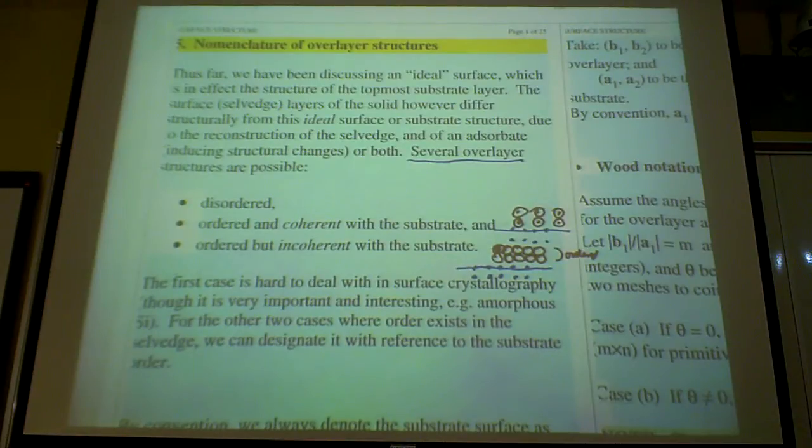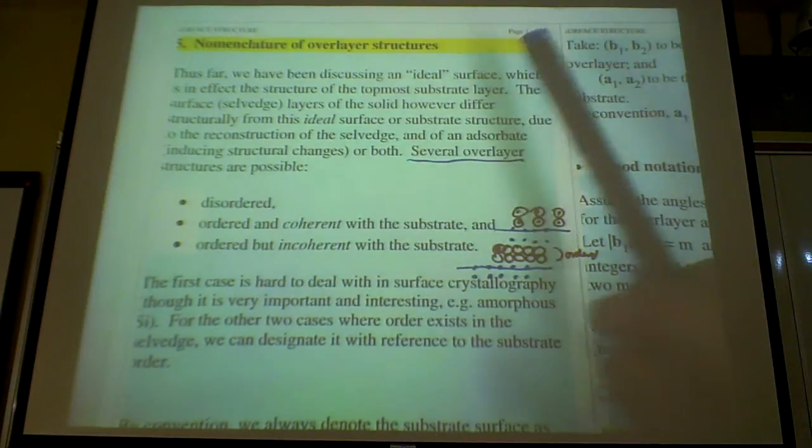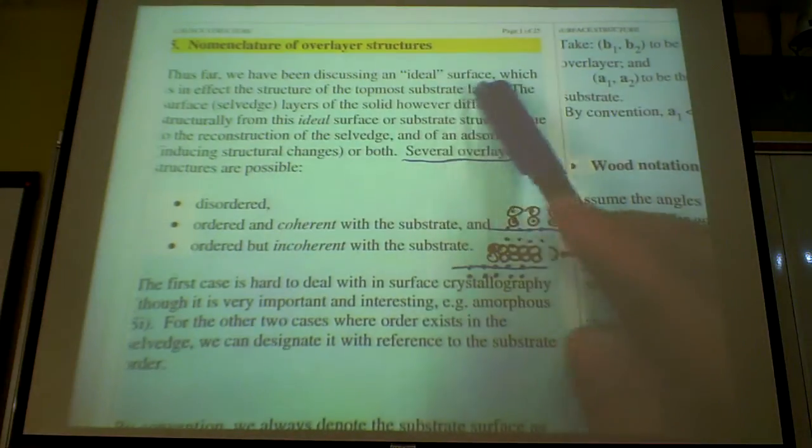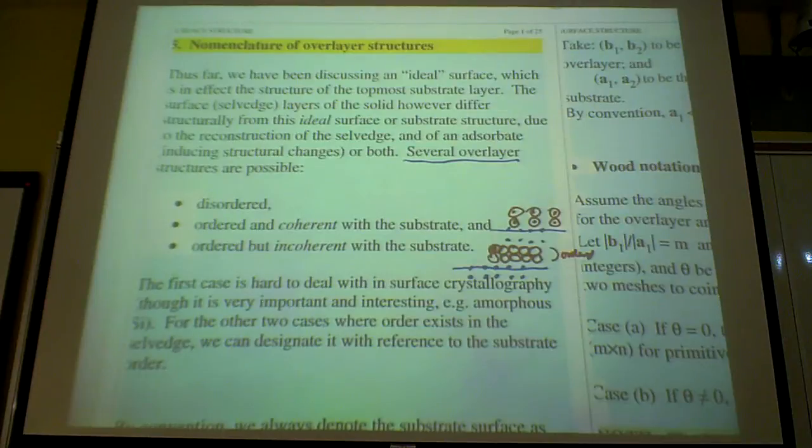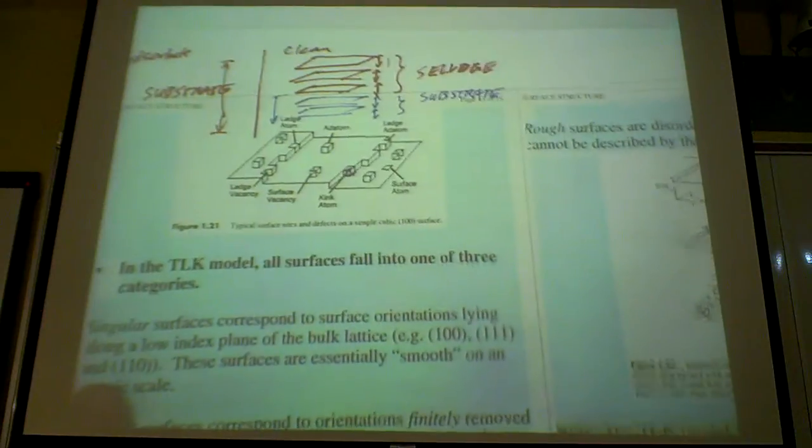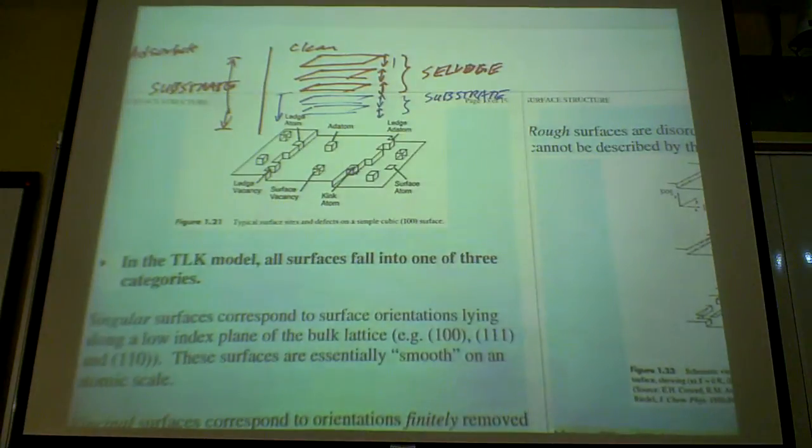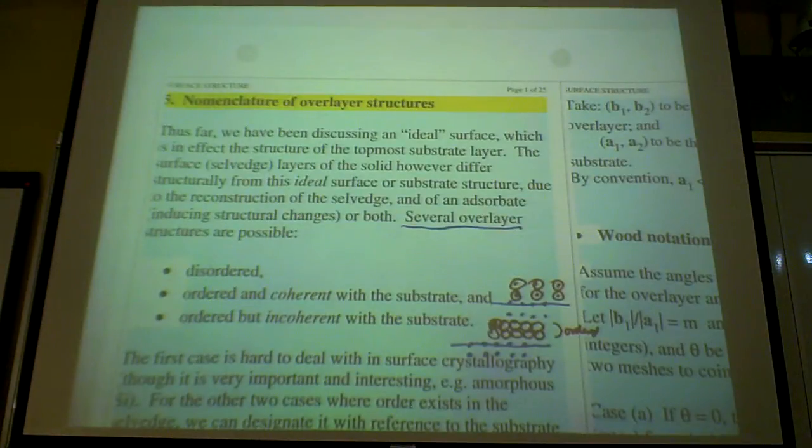So overlay structure. First of all, there's a few terminology that I want you to know about. We've been talking about ideal surface. Once again, we start off today talking about this ideal structure. Meaning that the top layer, top layer of the 3D structure, bulk structure that you have. And in effect, I say in effect, topmost substrate layer. So once again, we reference to this picture that we have. So we're really talking about the first blue layer, about the substrate layer that we're talking about. That's what we're dealing with.